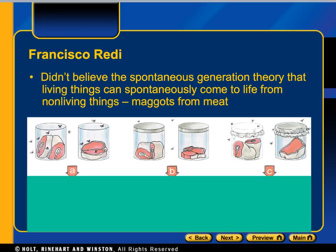In experiment A, the flies were able to reach the meat because there was no lid, so there were maggots on top of the meat. In experiment B, there was a tightly closed lid, so the flies couldn't get into the jar — there were no maggots inside. In experiment C, there was a net, so the flies could fly around, they smelled the meat, and reproduced — all the maggots were on top of the net, and none were inside the jar. So if the spontaneous generation theory were true — that maggots come from meat — then maggots would have shown up in the jar in experiment B. That did not happen, so Francisco Redi proved that theory wrong.